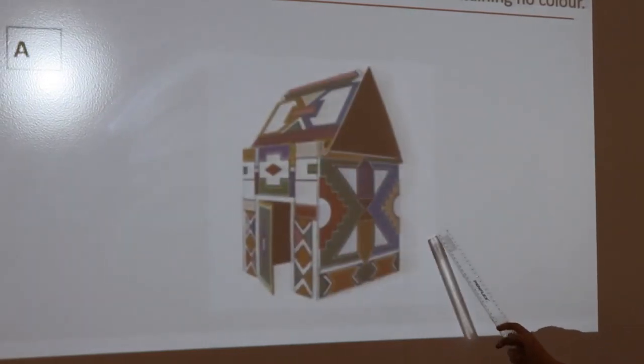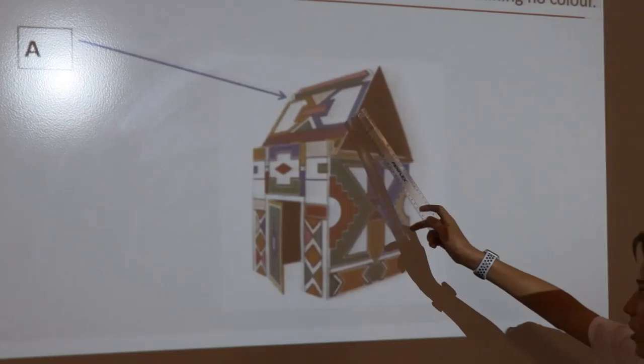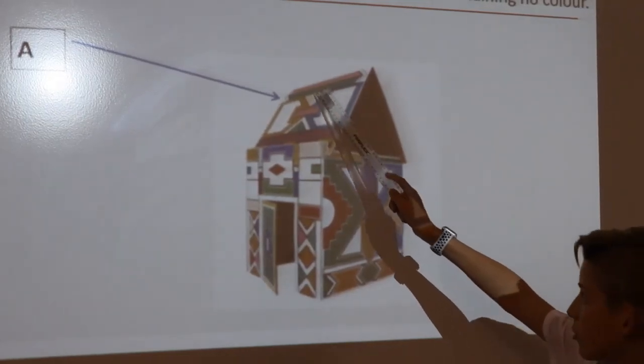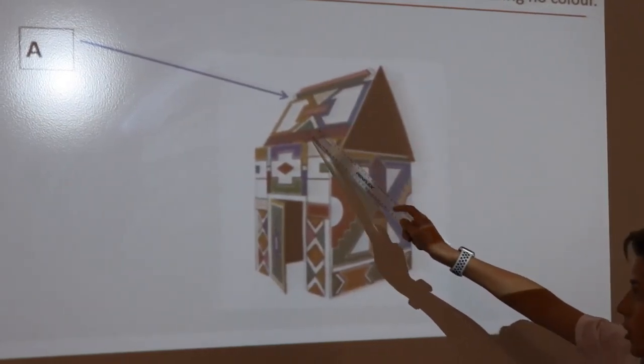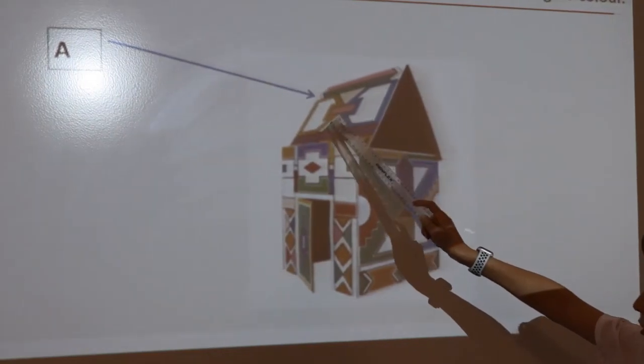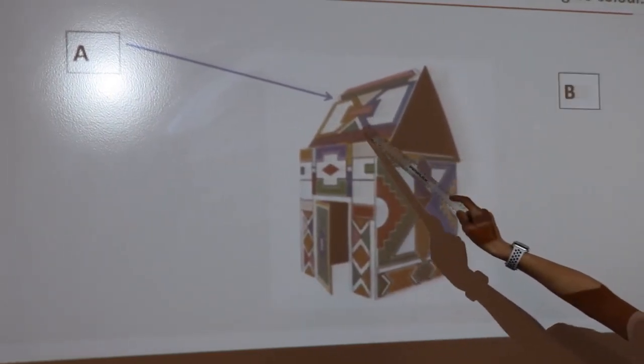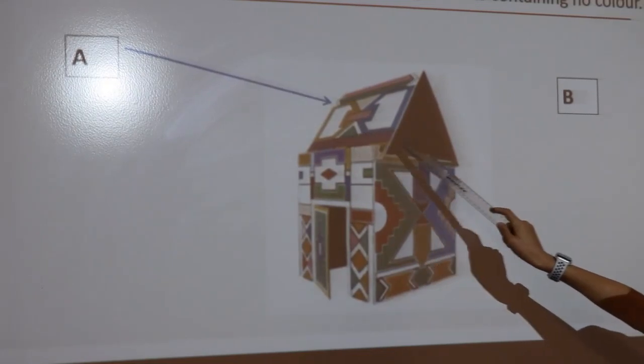On panel A, it is symmetrical going down vertically because both sides match, but not across because of the white B at the bottom.